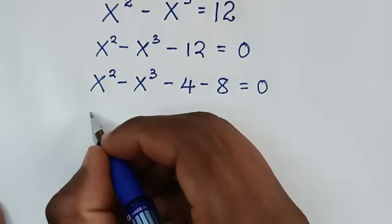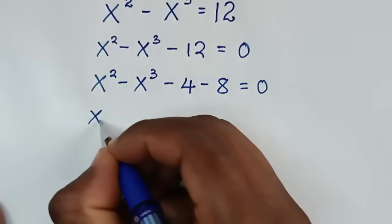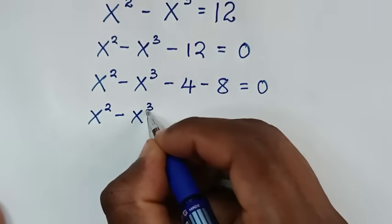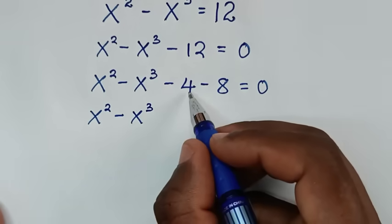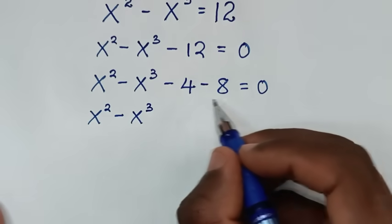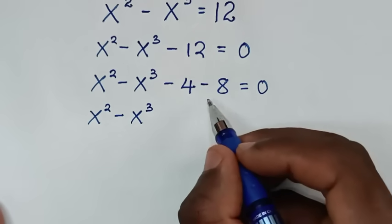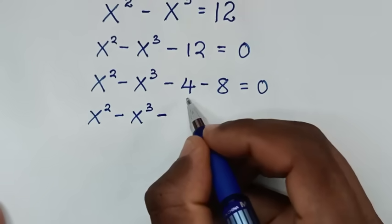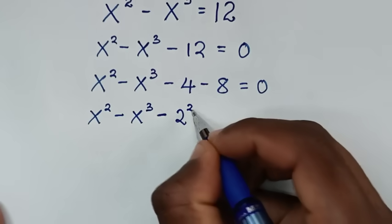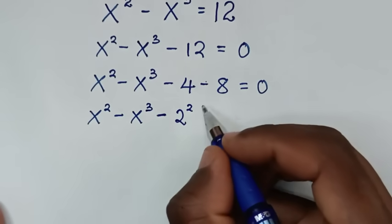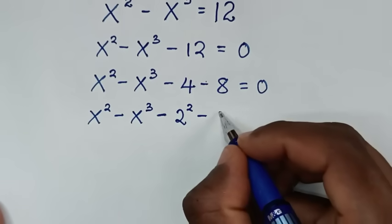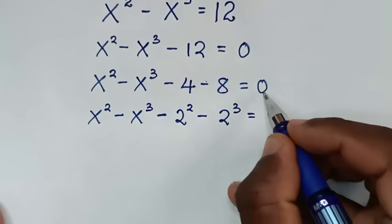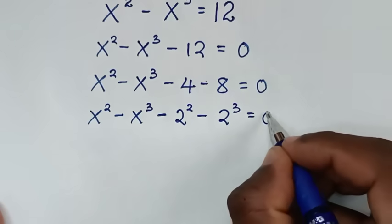So we have x squared minus x to the power 3, and we put 4 and 8 in terms of exponents. So minus 4 is the same as 2 to the power 2, and minus 8 is the same as 2 to the power 3, then equal to 0.